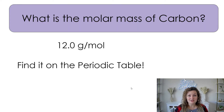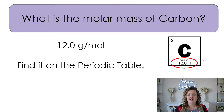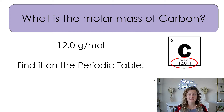If you're going to calculate the molar mass of a simple element, say carbon for example, you're just looking at the periodic table at the bottom of the square for the mass of that particular element. So carbon would be just 12, or 12.0, depending on how you're rounding and your sig figs.